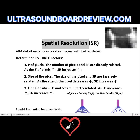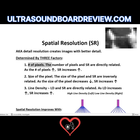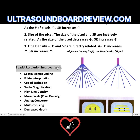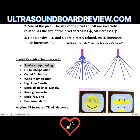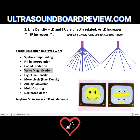Spatial resolution is also called detail resolution. Three things determine spatial resolution: the number of pixels, the size of the pixel, and line density. Spatial resolution is improved by spatial compounding, fill-in interpolation, coded excitation, write magnification, high line density, more pixels or pixel density, analog converter, multi-focusing, and decreased depth. Decreased depth is especially important to remember — it increases spatial resolution.